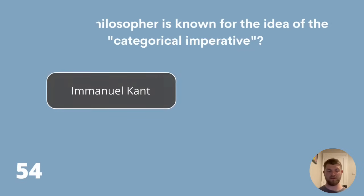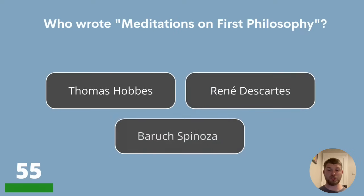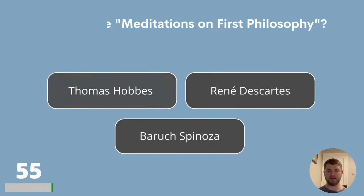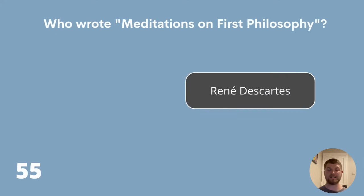Question 55. Who wrote Meditations on First Philosophy? Thomas Hobbes, René Descartes or Baruch Spinoza? Meditations on First Philosophy was written by René Descartes.